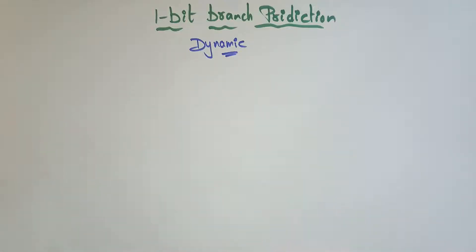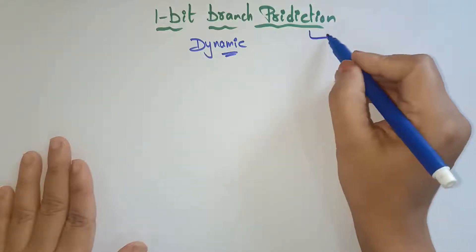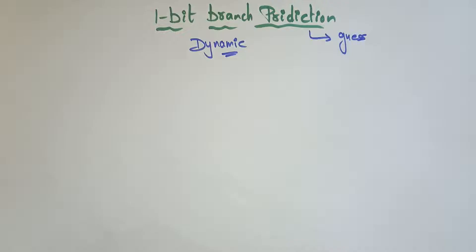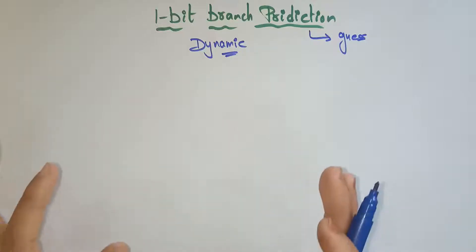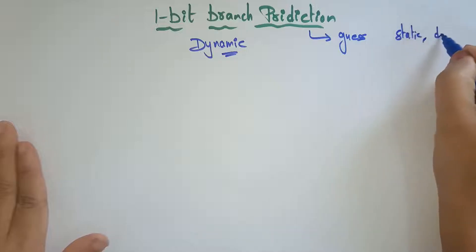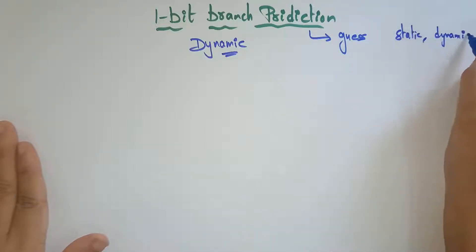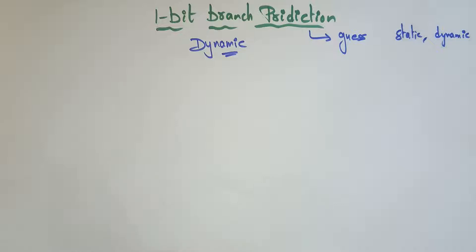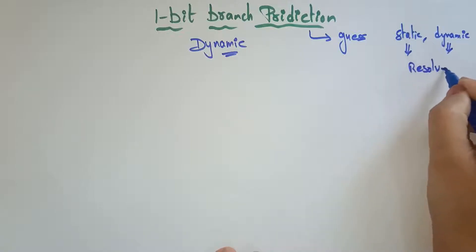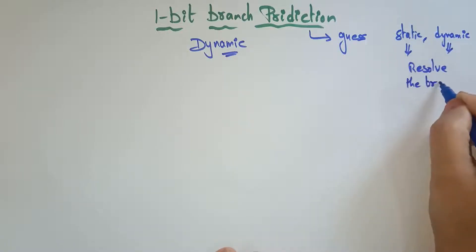First of all, why are we taking predictions? A prediction is nothing but a guess — the hardware is going to guess what the expected outcome will be. Branch predictions are of two types: one is static and another is dynamic. Both static and dynamic are used to resolve branch hazards.